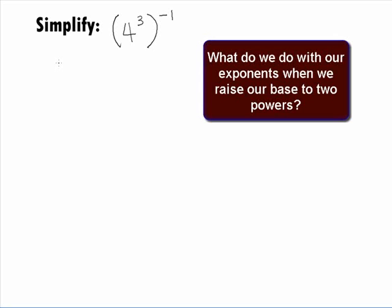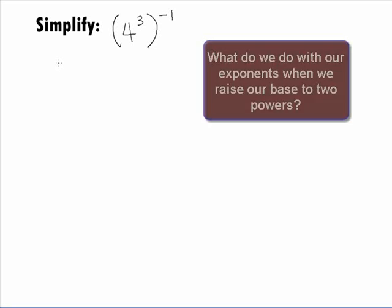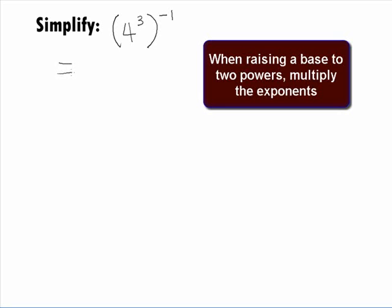So, what do we do with our exponents when we are raising our base to 2 powers? We multiply them. With this in mind, we can rewrite our expression as 4 raised to the 3 times negative 1 power.